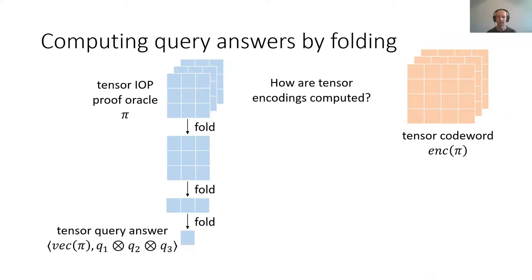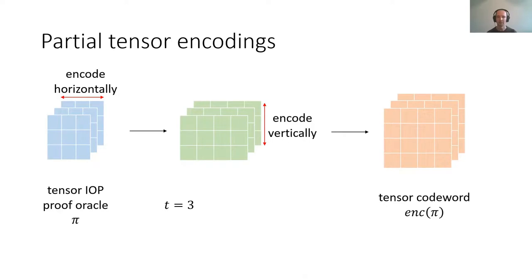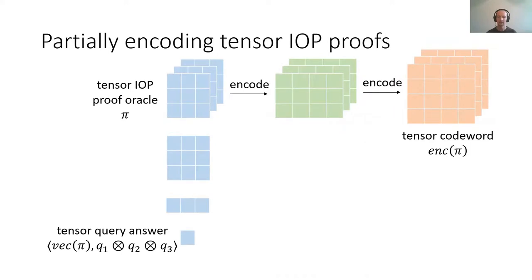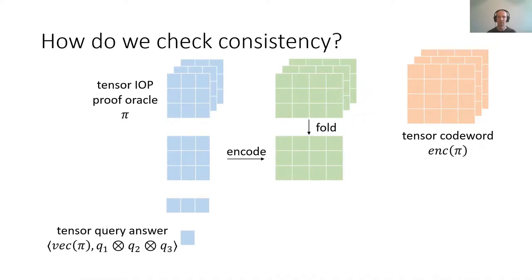What about the tensor encodings? How can they be computed from the tensor IOP proof oracle? By definition of the tensor encoding, we can consider the tensor encoding as a sequential computation too, where we encode different dimensions of this piece of tensor IOP proof data separately — we could encode horizontally first, and then vertically to get our final tensor codeword. In order to perform the consistency check, we fill in an extra piece of this diagram — the green rectangle — and this is an encoding of a piece of tensor IOP proof data that's already been partially folded up. Alternatively, it's a folding of some tensor IOP proof data that's only been partially encoded.